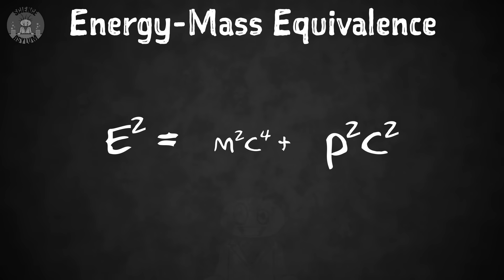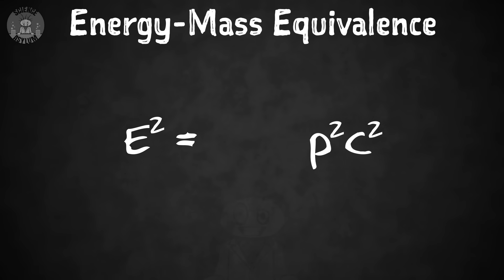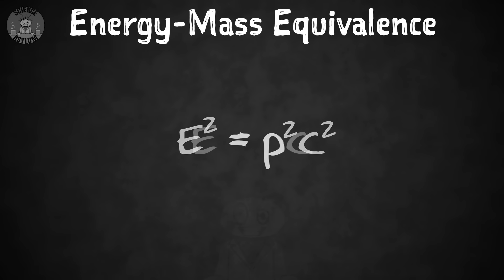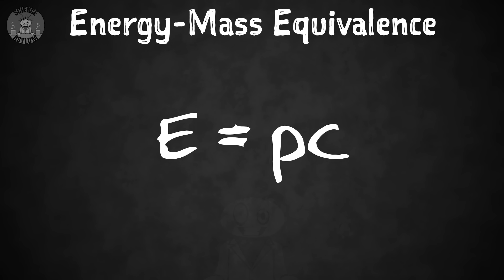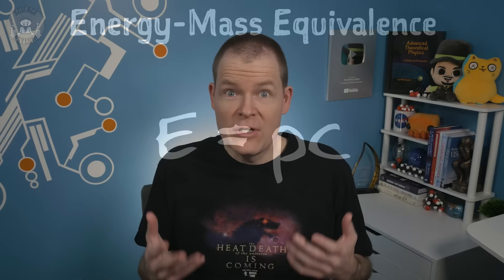But what about light? Well, Einstein's version doesn't work. Minkowski's version does, though. If we plug in zero for mass, we ultimately get E equals pc — this is the energy of a photon, the particle of light. Minkowski's version applies to matter and light, which is everything.